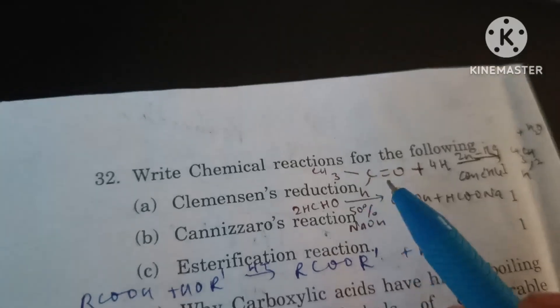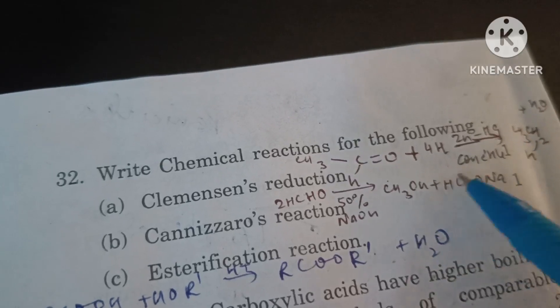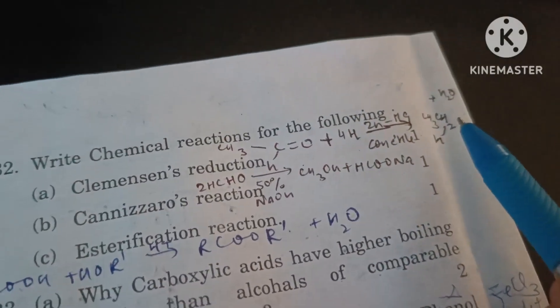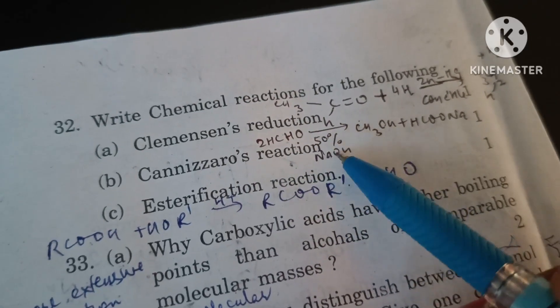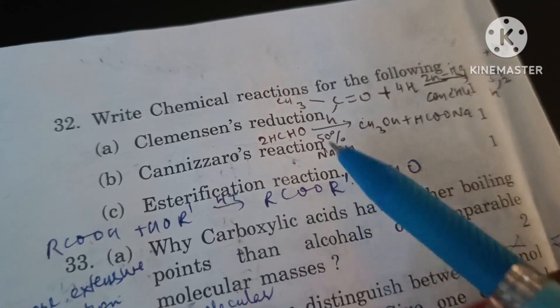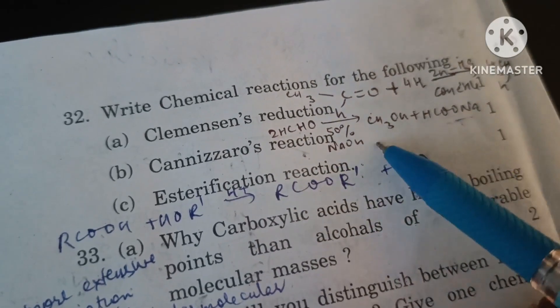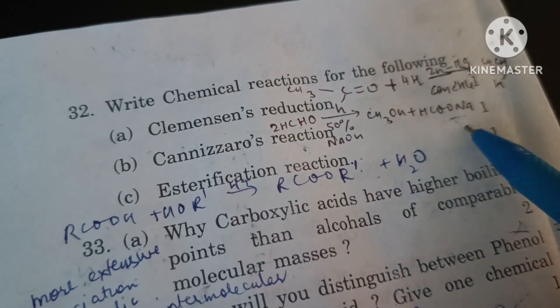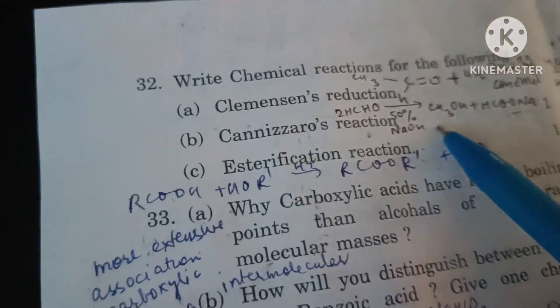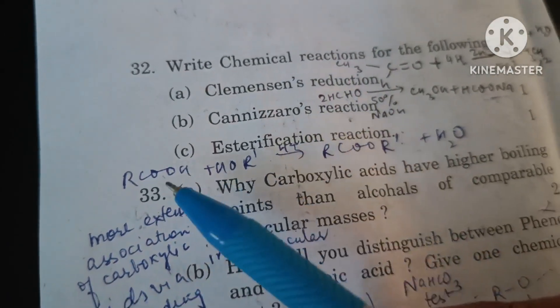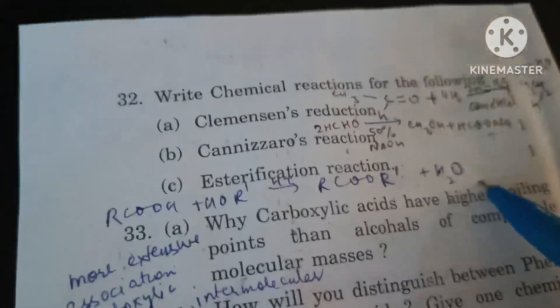Write chemical reactions for the following. Clemmensen reduction: when a compound containing carbonyl group is reduced with zinc amalgam and concentrated HCl into an alkene. Cannizzaro reaction: when formaldehyde is treated with concentrated NaOH or 50% NaOH it gets simultaneously oxidized as well as reduced to form alcohol and sodium salt of carboxylic acid. Esterification reaction: reaction between acid and alcohol in the presence of acid to form an ester is called esterification.